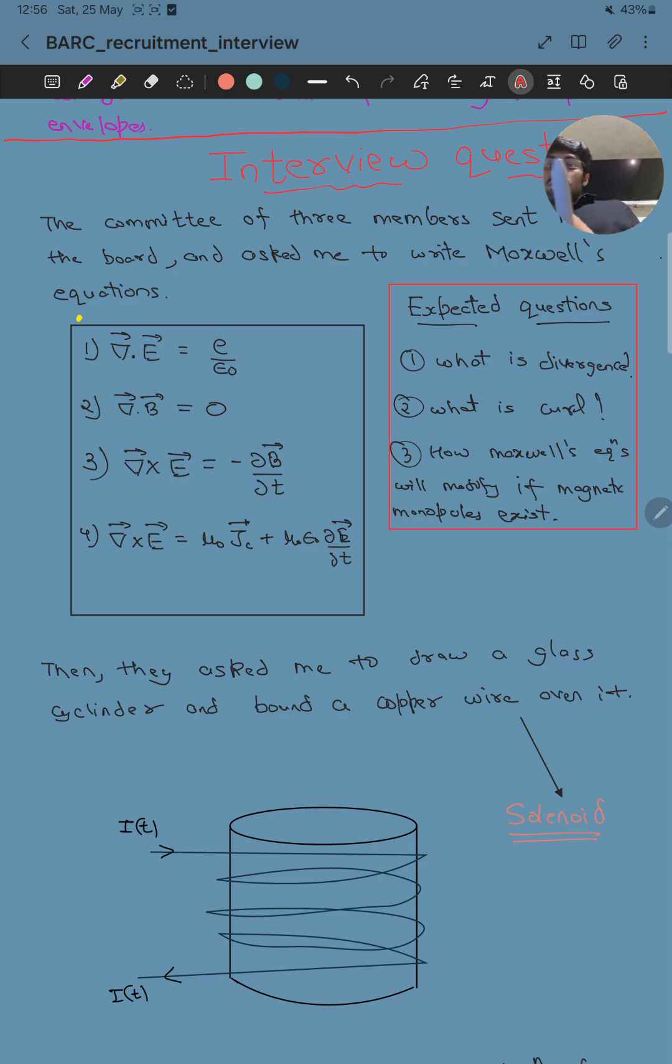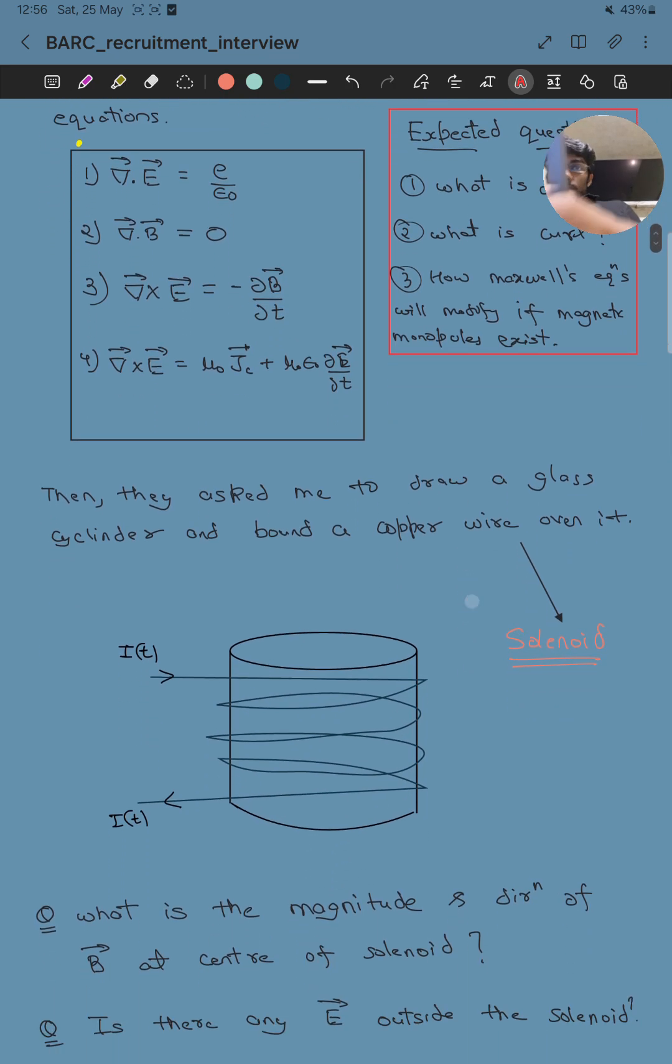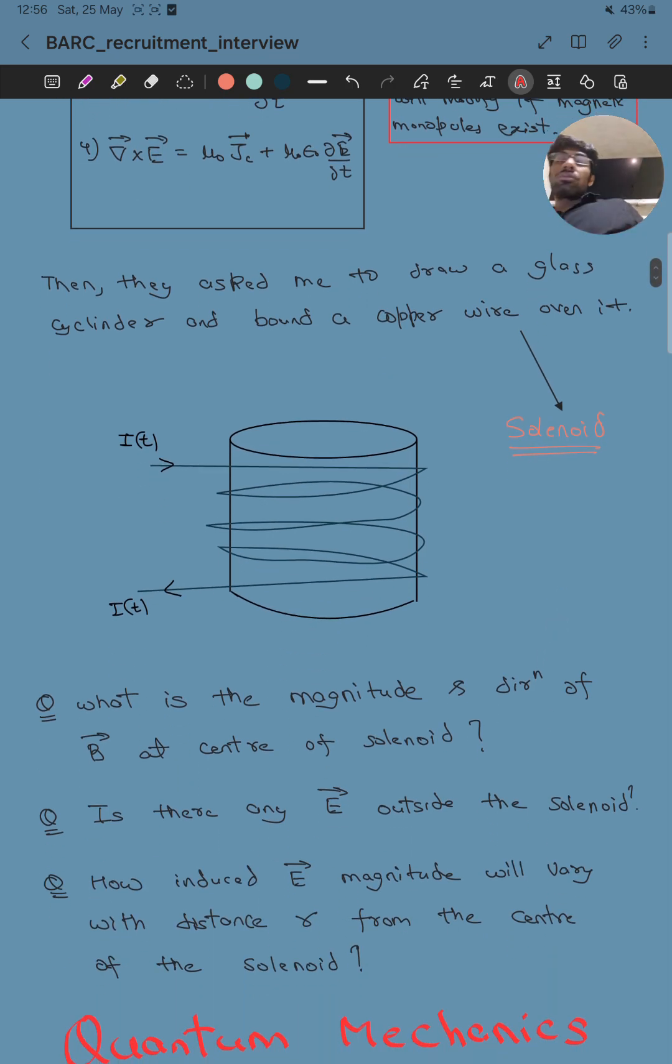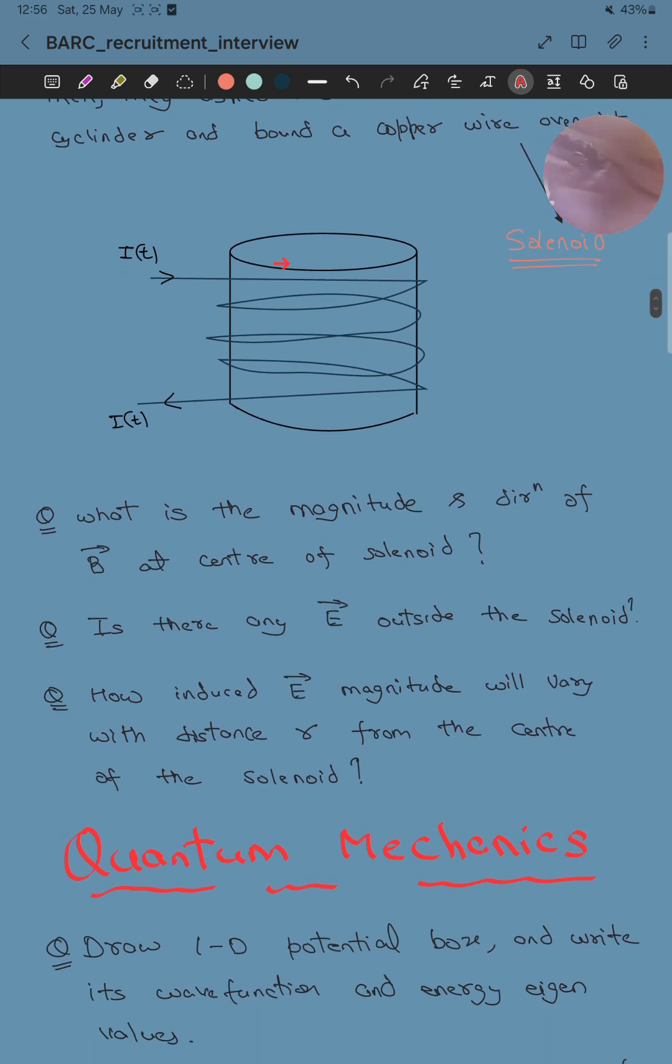Now they moved on. They asked me to draw a glass cylinder with a copper wire wound over the cylinder, and suppose alternating current is flowing through the wire. This is a solenoid. They asked me the magnitude and direction of the magnetic field in the center of the solenoid.